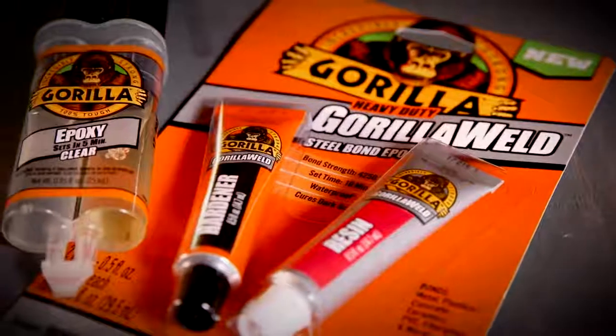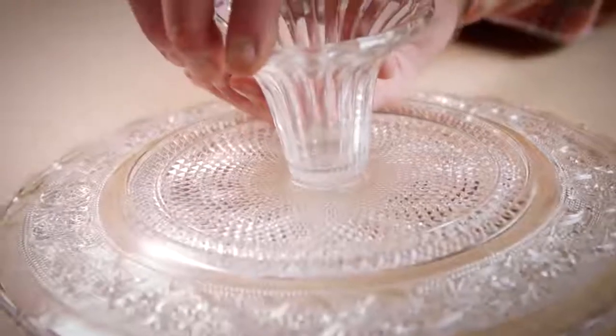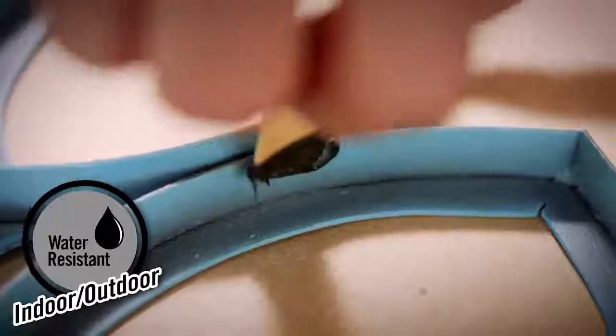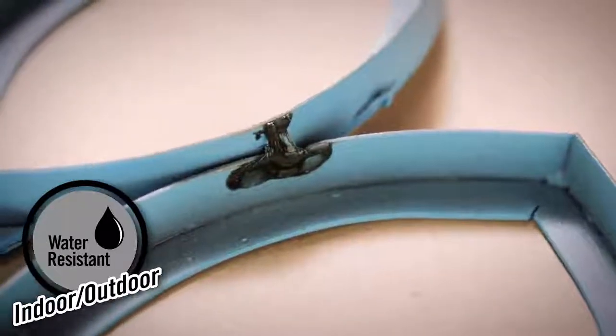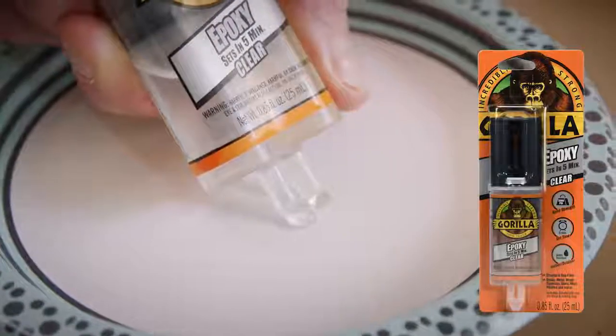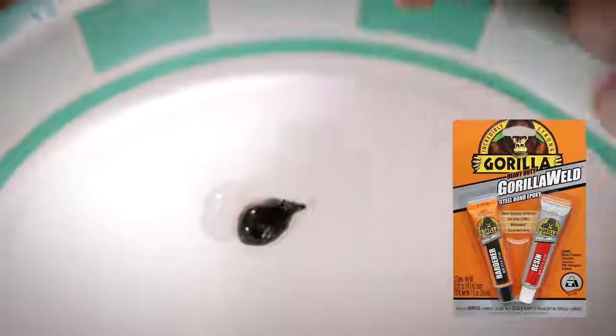Gorilla offers two premium epoxies, including the original Gorilla Epoxy that creates a strong, clear bond, and Gorilla Weld, a heavy duty epoxy with incredible strength up to 4,250 PSI. Gorilla Epoxy is available in an easy-to-use syringe, while Gorilla Weld is available in traditional two-part tubes.